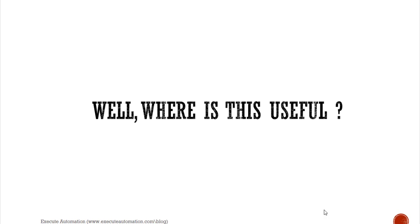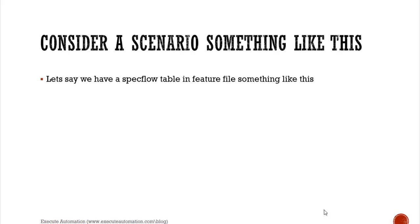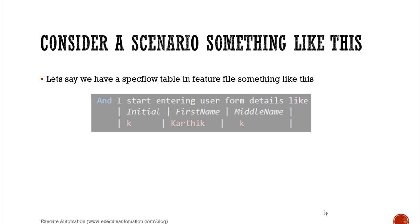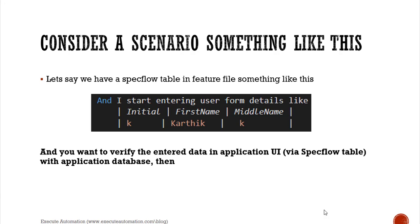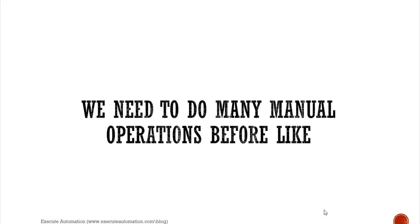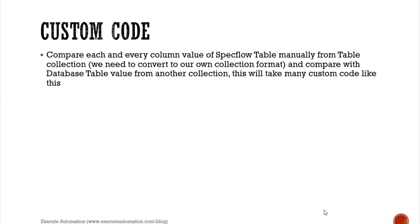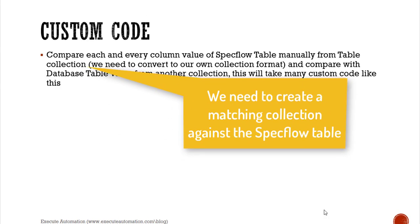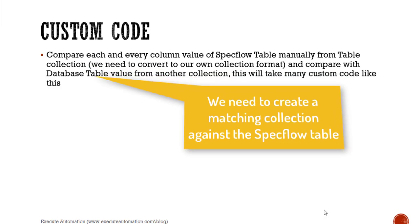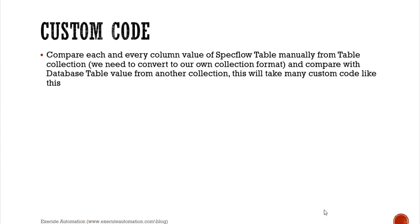Consider a scenario like this: let's say we have a SpecFlow table in a feature file and we want to verify the entered data in the application UI via the SpecFlow table with the application database. Then we need to do many manual operations - we need to compare each and every column value of the SpecFlow tables manually from the table collection. The table collection is something we need to create to store all the SpecFlow values in a specific format, and then compare with the database table value from another collection.